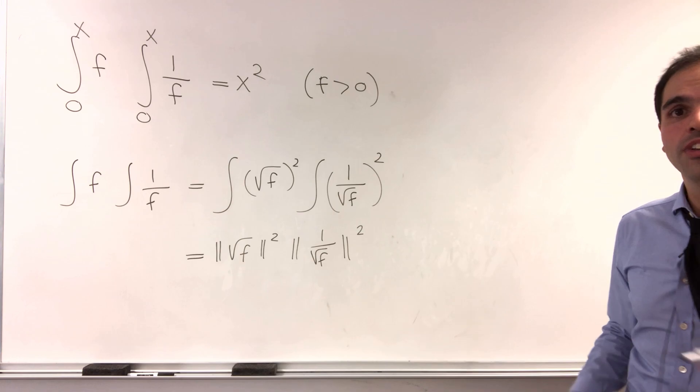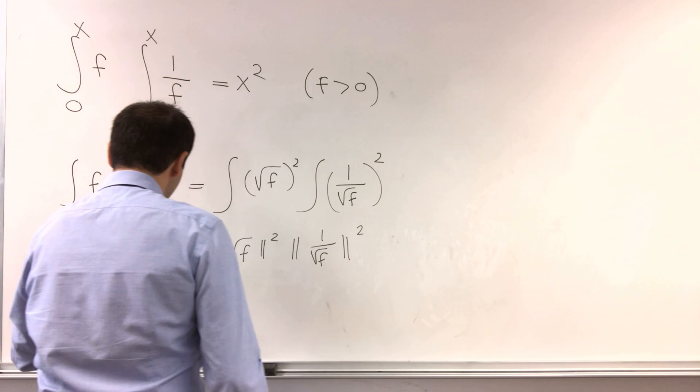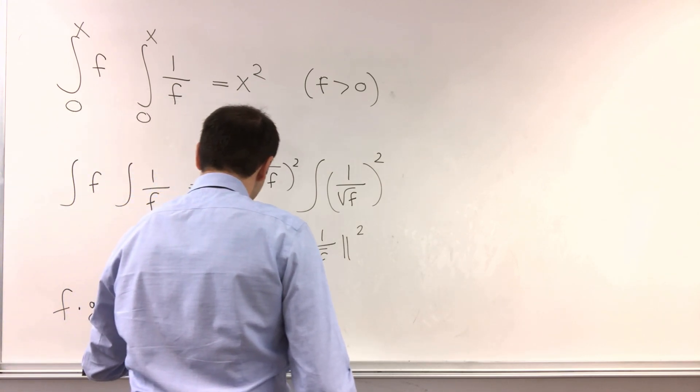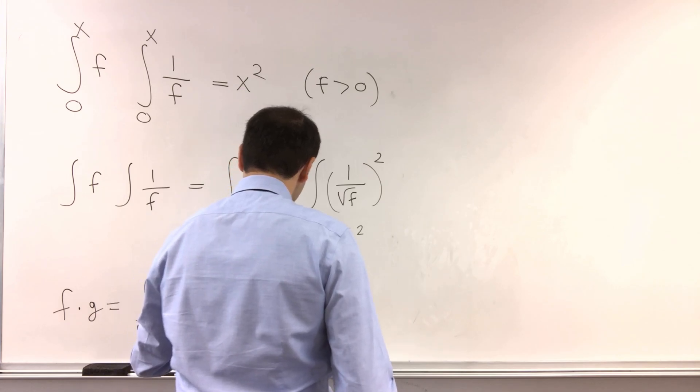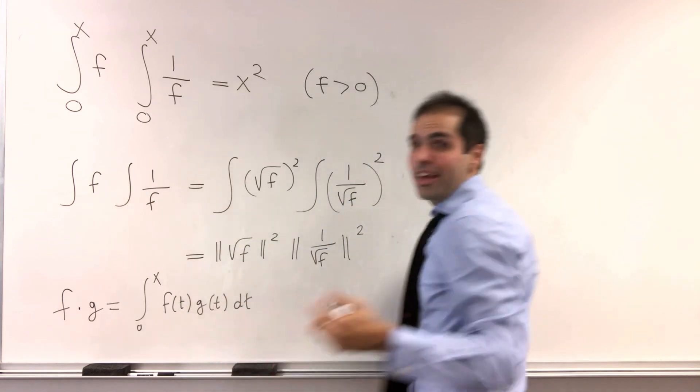Where, well, what inner product am I using? I'm just using that f dotted with g is the integral from 0 to x, f of t, g of t dt. So, indeed, if you replace it by square root of f and square root of f, you get f.